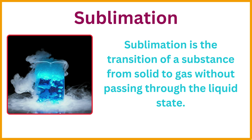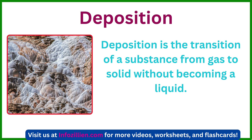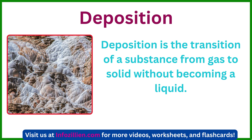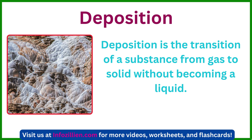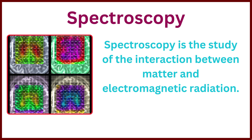Sublimation is the transition of a substance from solid to gas without passing through the liquid state. Deposition is the transition of a substance from gas to solid without becoming a liquid. Atomization is the process of converting a substance into tiny droplets or particles. Spectroscopy is the study of the interaction between matter and electromagnetic radiation.